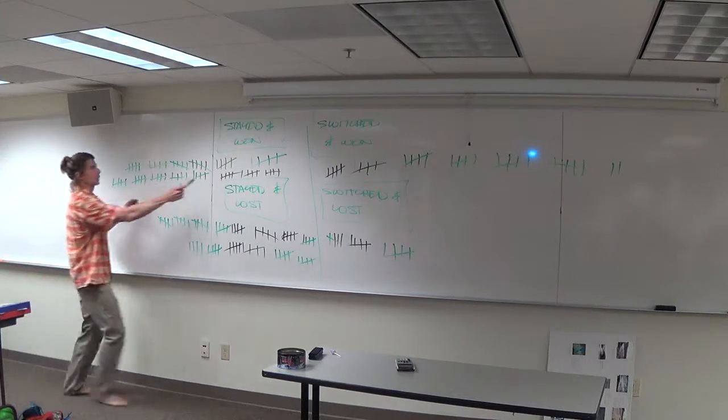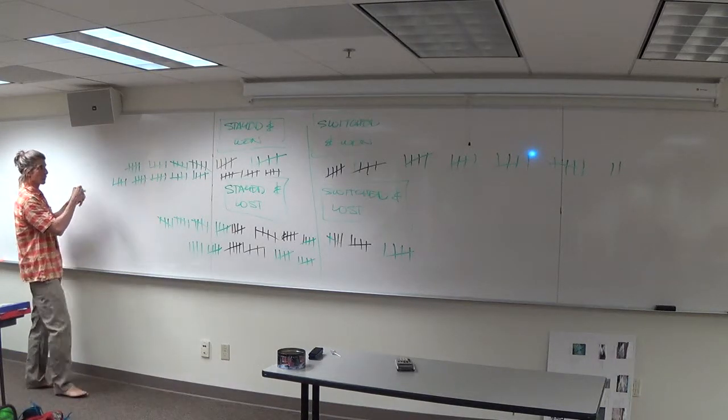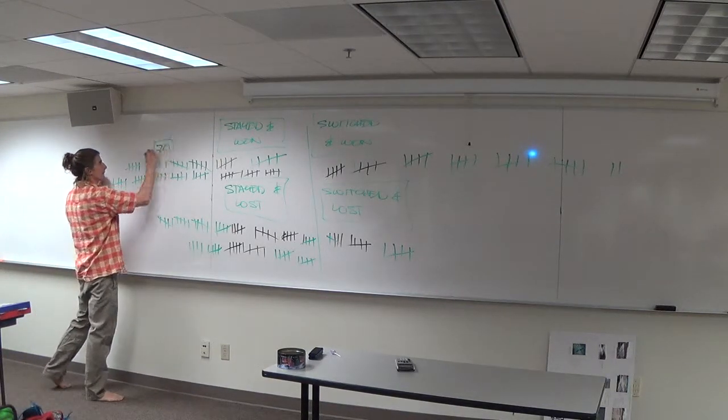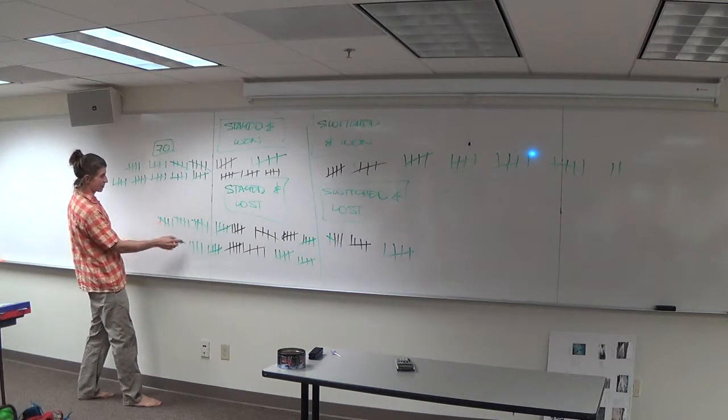Well, hang on. 5, 10, 15, 20, 25, 30, 35, 40, 45, 50, 55, 60, 65, 70. So this is 70. 5, 10, 15, 20, 25, 30, 35, 40, 45, 50, 55, 60, 65, 69.